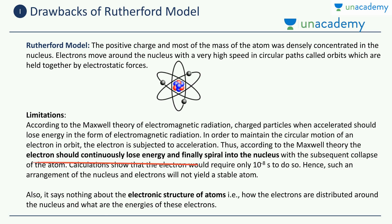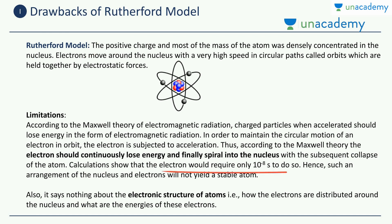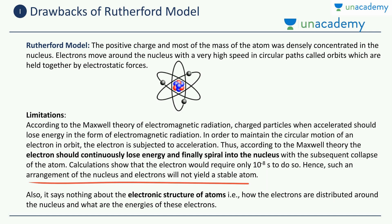According to Maxwell's theory, the electron should continuously lose energy and finally spiral into the nucleus, with the subsequent collapse of the atom. But this is not what we observe — the atom doesn't collapse. Calculations show that the electron would require only 10 to the power minus 8 seconds to spiral and collapse. Hence, such an arrangement of the nucleus and the electrons will not yield a stable atom. But this does not happen, and hence the Rutherford model is not correct.